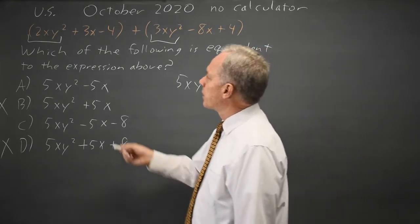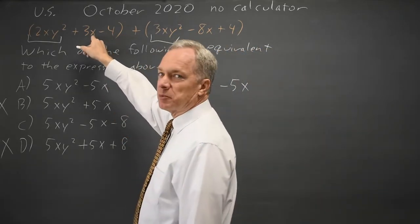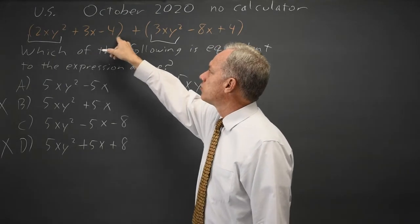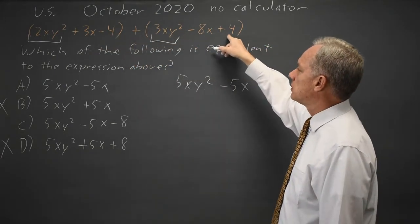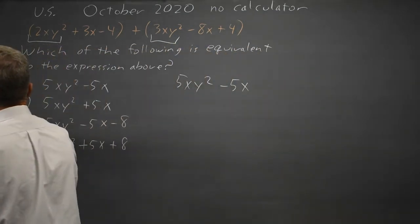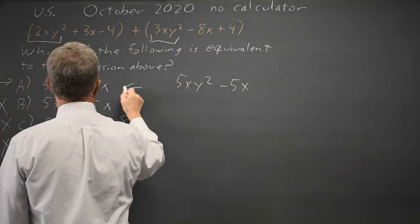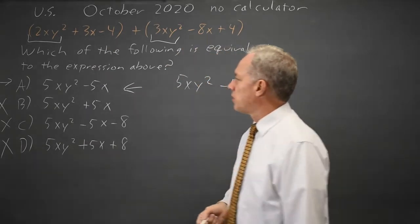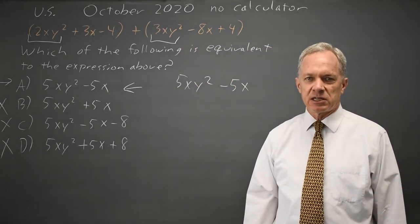And then finally we have to collect our constant terms. Notice I'm collecting like terms. Negative 4 plus 4 is 0. So the minus 8 is incorrect, and the 5xy² minus 5x is the correct answer in this case.